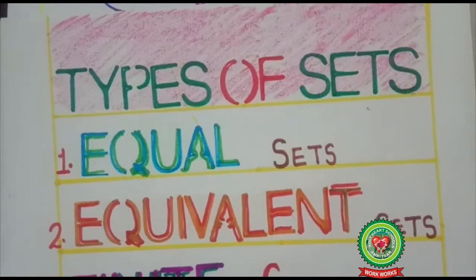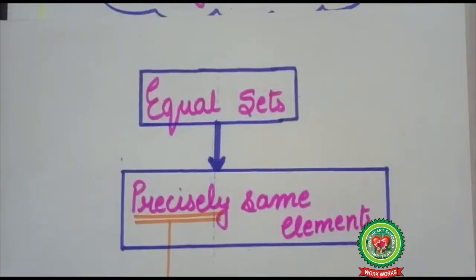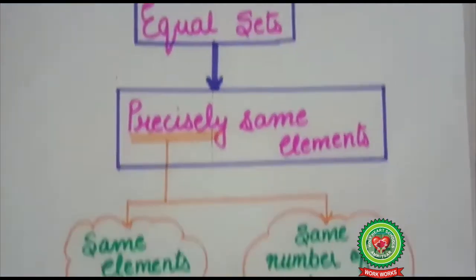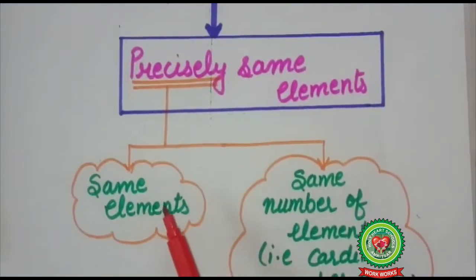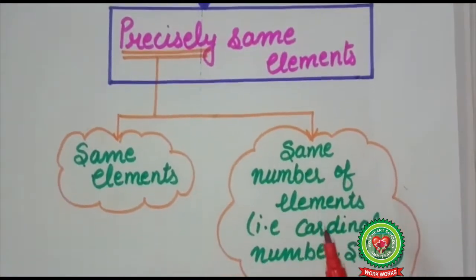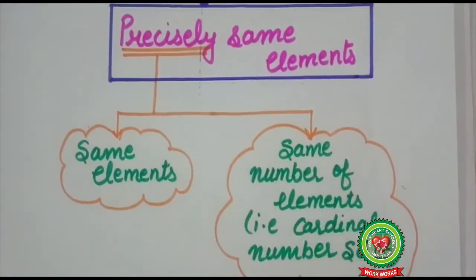What are equal sets? Two sets are said to be equal if they are having precisely the same elements. Here the word 'precisely' means same elements and same number of elements.